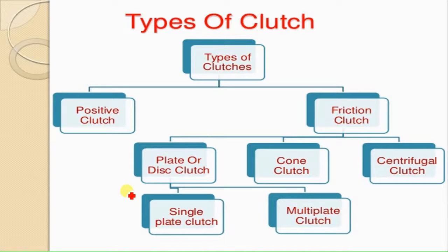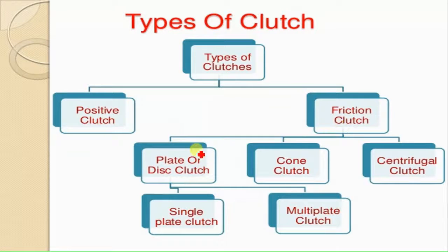As far as the types of clutch are concerned, there are various types. Basically it is classified into two categories: one is called the positive clutch, sometimes called the jaw clutch or claw clutch; and another type is called the friction clutch. Friction clutches are further categorized into disc clutch, cone clutch, and peripheral clutch. The disc or plate clutch is further classified as single plate clutch and multiple plate clutch.